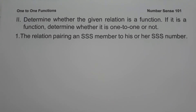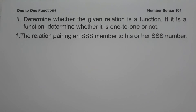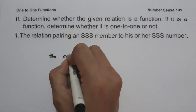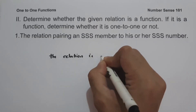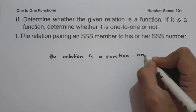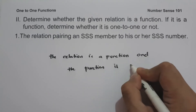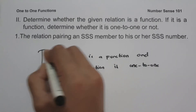On the second set of examples, we determine whether a given relation is a function, and if so, whether it is one-to-one. On number one, the relation pairs an SSS member to his or her SSS number. This relation is a function because each SSS member is assigned a unique SSS number — no member can be assigned two different SSS numbers. Therefore, the relation is a function and the function is one-to-one.